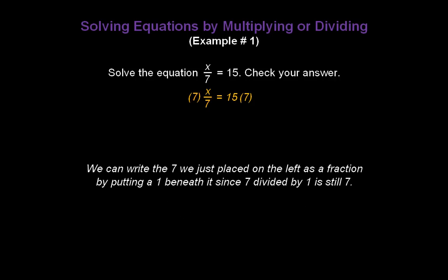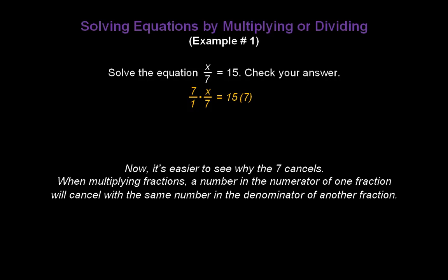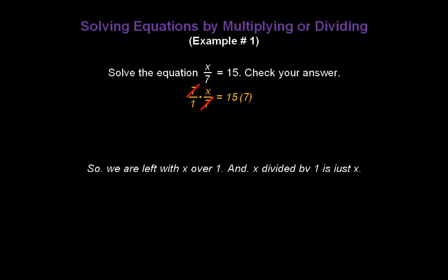I can write the 7 that we just placed on the left as a fraction by putting a 1 underneath it, since 7 divided by 1 is still 7. So let's go ahead and change the 7 to 7 over 1. Just like that. There we go. Now, it's easier to see why the 7s cancel. Because when multiplying fractions, a number in the numerator of one fraction will cancel with the same number in the denominator of another fraction. So the 7s have canceled. And now we're left with just x over 1, or x divided by 1. And, of course, that's just x.